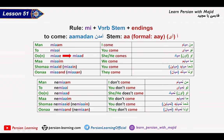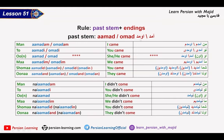The conjugation of AAMADAN we covered in earlier lessons. The present stem is A in spoken Persian and AYE in formal Persian: MIYAAM, MIYAI, MIYAAD, NEMYAAM, NEMYAI, NEMYAAD, and so on. For past tense, the stem is OMAAD: OMAADAN, OMADI, OMADIM, and so on.